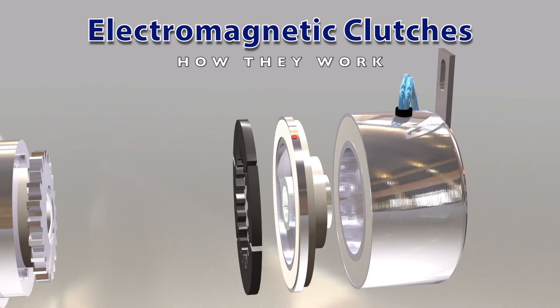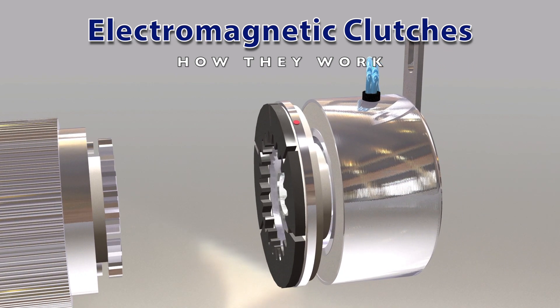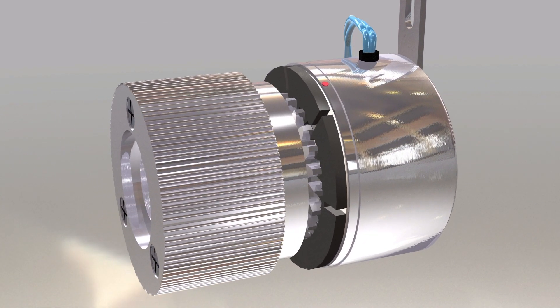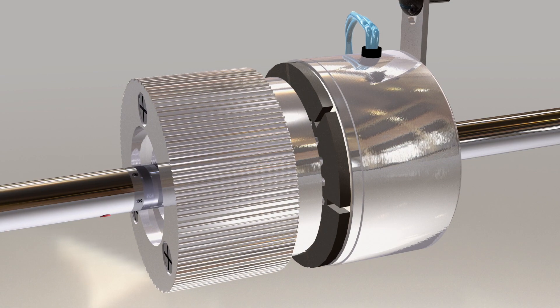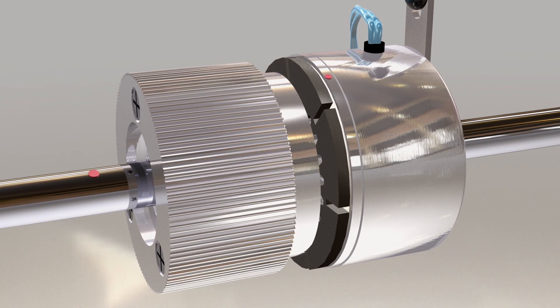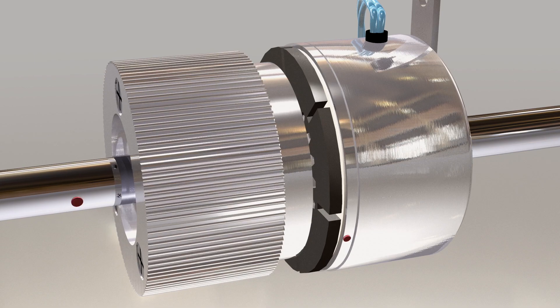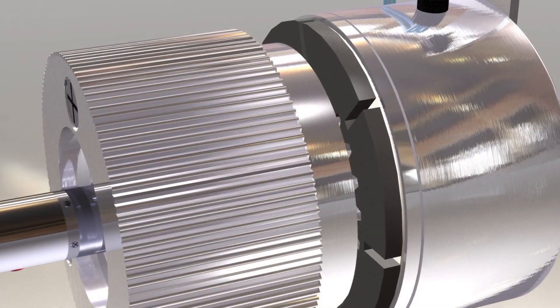Electromagnetic clutches: the majority of electromagnetic clutches use a single plate friction surface to engage the input and output members of a clutch. Although there are multiple disc and tooth designs, all function in a similar manner.